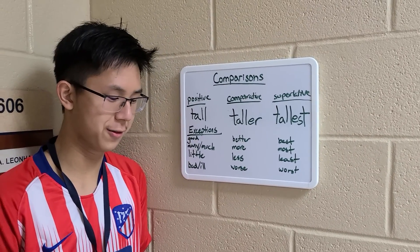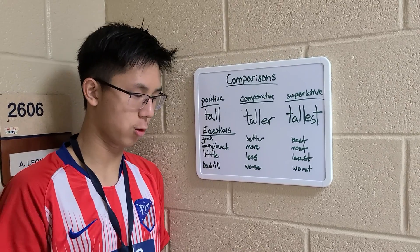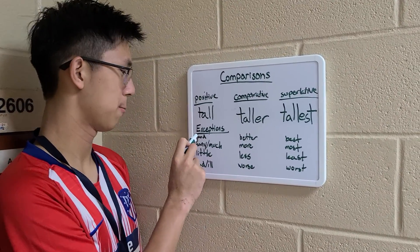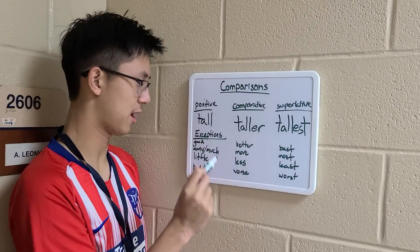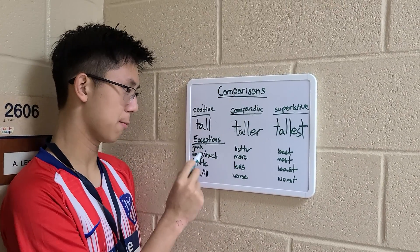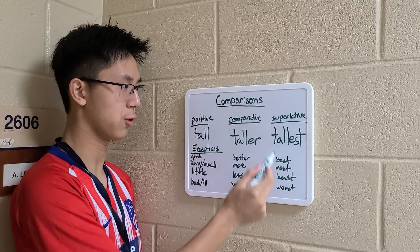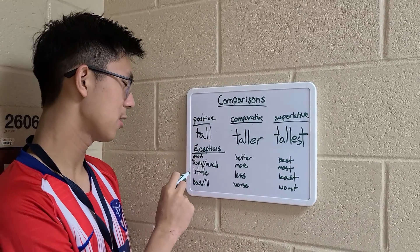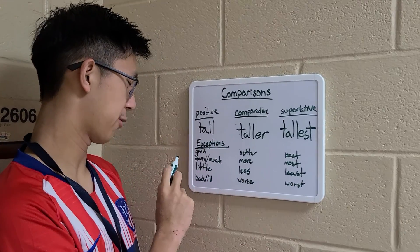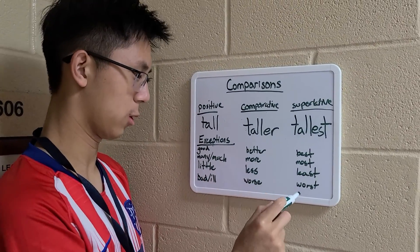Finally, there are a few exceptions to this rule. We have exceptions on the board behind us. So good becomes better and best instead of gooder and goodiest. Many and much both use more for comparative and most for superlative. Little uses less and least. And both bad and ill go to worse and worst.